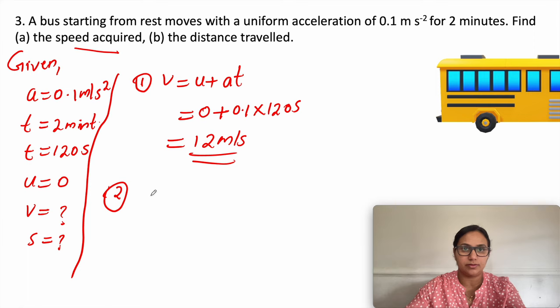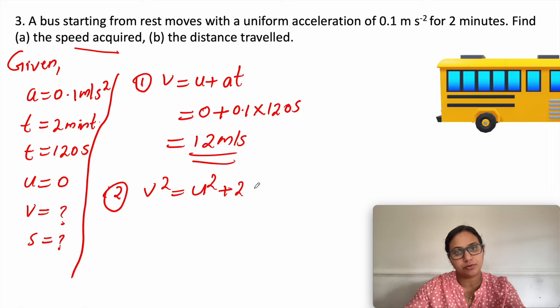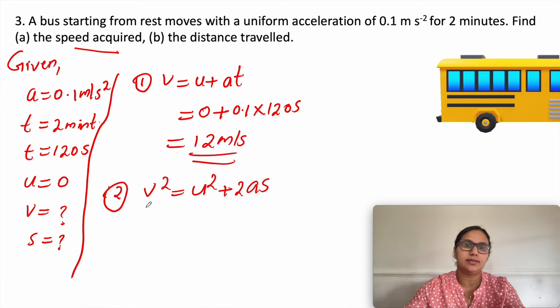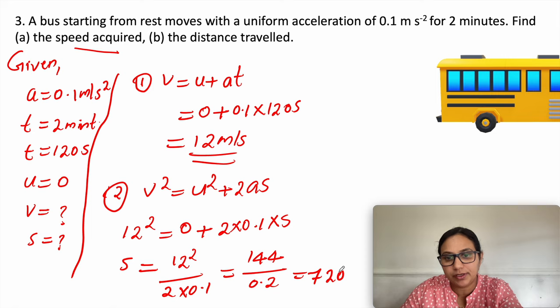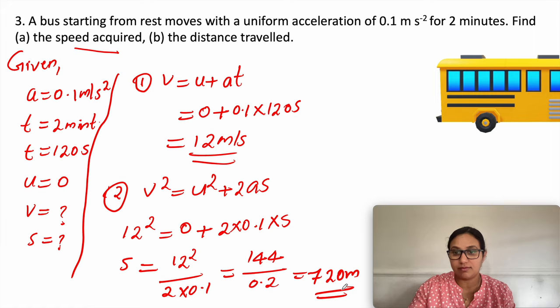For the distance traveled, using the third equation v² = u² + 2as: 12 squared equals 0 plus 2 times 0.1 times s. So s equals 144 divided by 0.2, which gives 720 meters. The velocity is 12 meter per second and distance traveled is 720 meter.